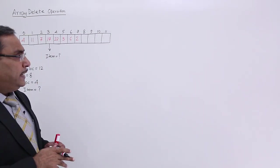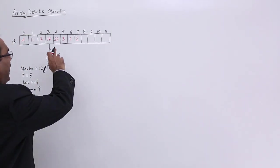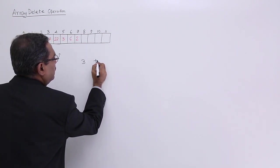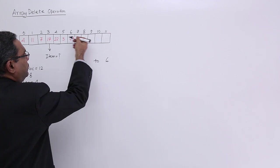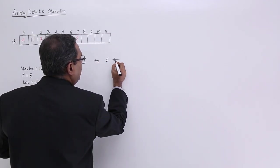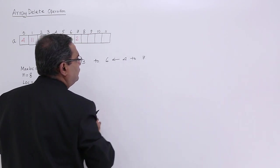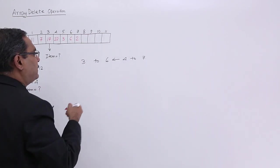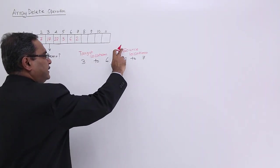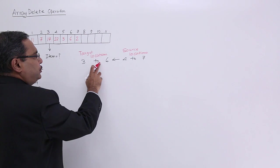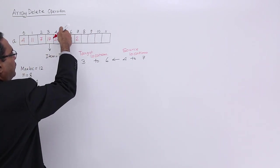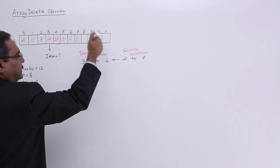That means, in that case at the location number 3, 2, 6, the data which will be coming from the location of a 4 to 7. So this is my target location and this is my source location. So 3, 2, 6 is my target location where the data will be coming from 4, then 5, then 6, then 7.